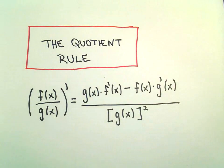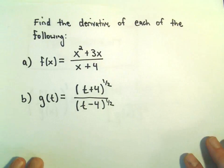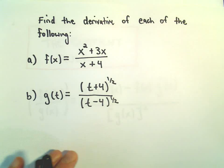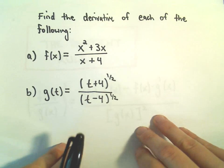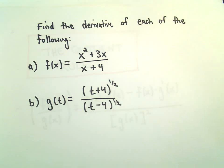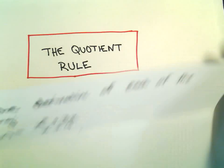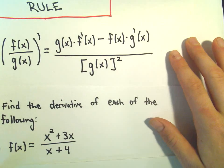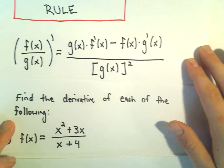All right, so a couple examples here. We'll just do part a first. So we're going to take the derivative here of x squared plus 3x over x plus 4. All righty, let me get situated. So let's see if we can put our formula in this as well.